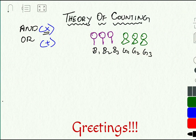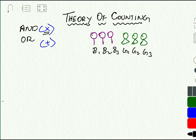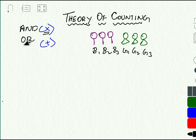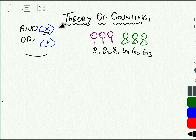Welcome back to Karadid Training Solutions. I'm Mohan, and this is session 6 on permutation and combination. Here we are going to deal with an important concept of combination, which is nothing but the theory of counting. Theory of counting emphasizes only two words: 'and' as well as 'or'. When the statement denotes the word 'and', we use the operator multiply. When it denotes the word 'or', we use the operator plus. We shall discuss this concept using a simple example.